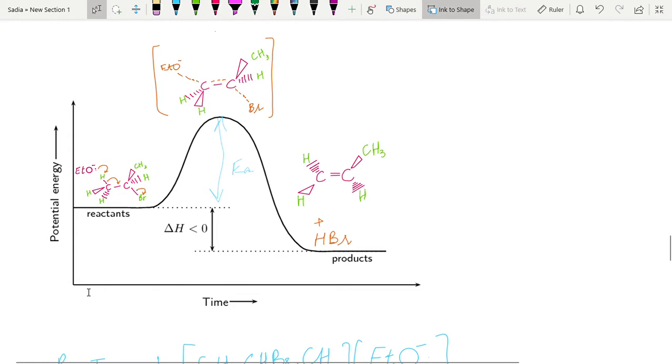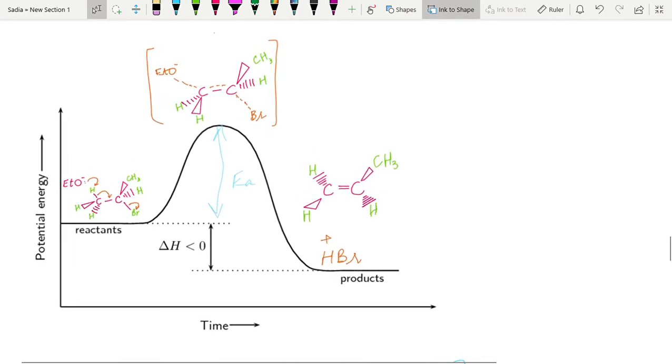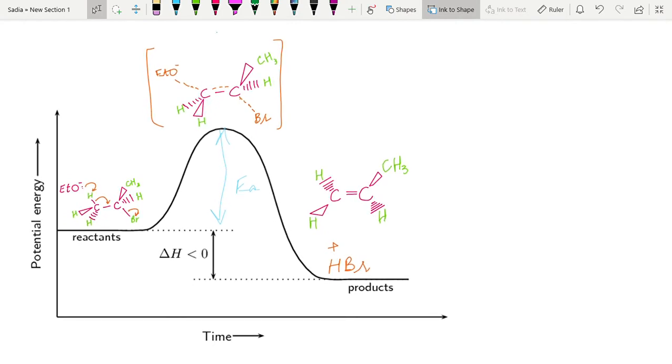In the previous lecture we discussed E2 reaction, elimination reaction for synthesis of alkenes. Now here we will look at the reaction mechanism placed in form of this graph. This is an exothermic graph and it shows that when reactants are converted into products, energy is released.